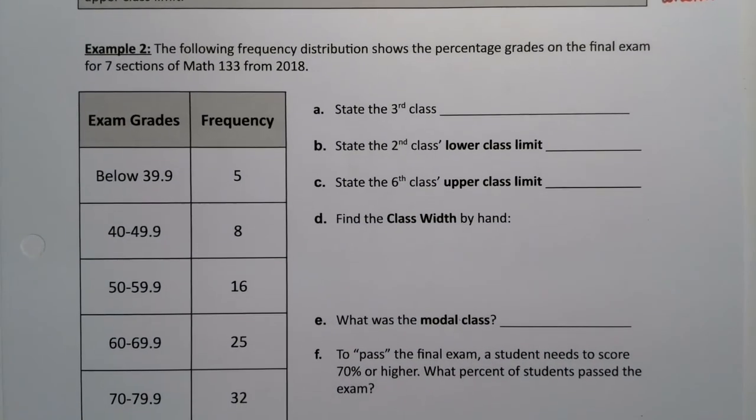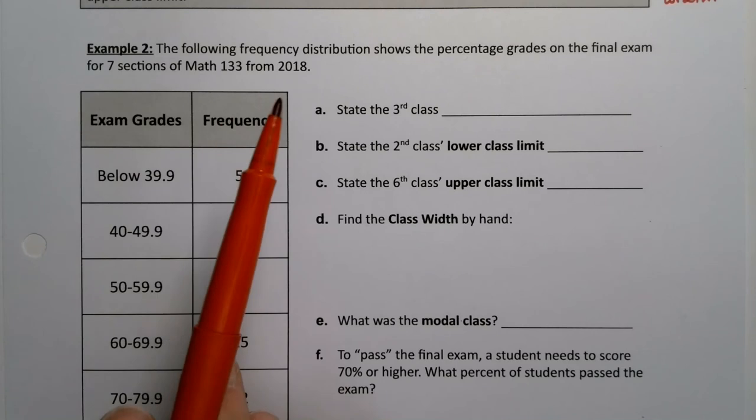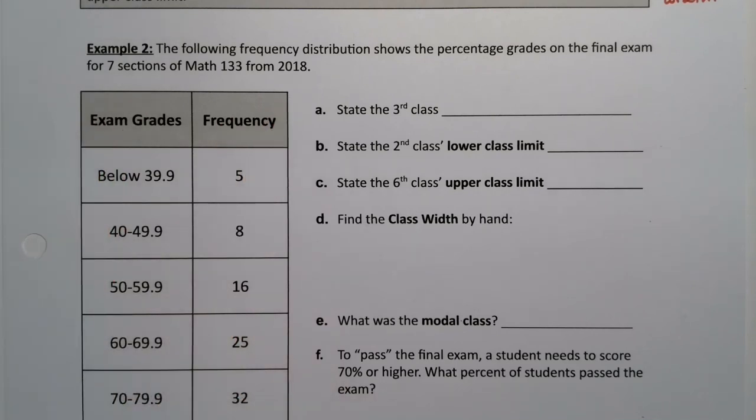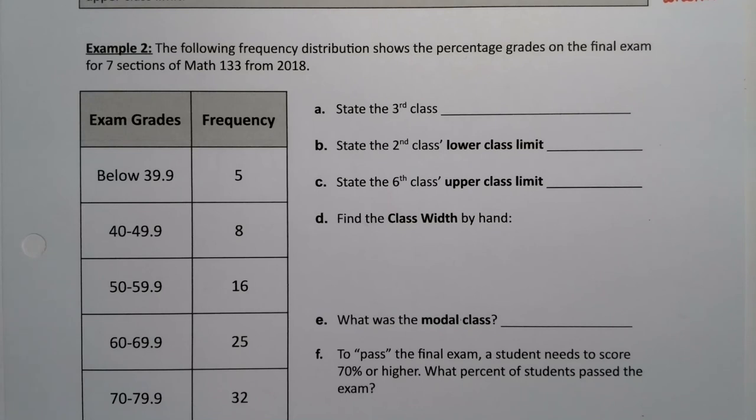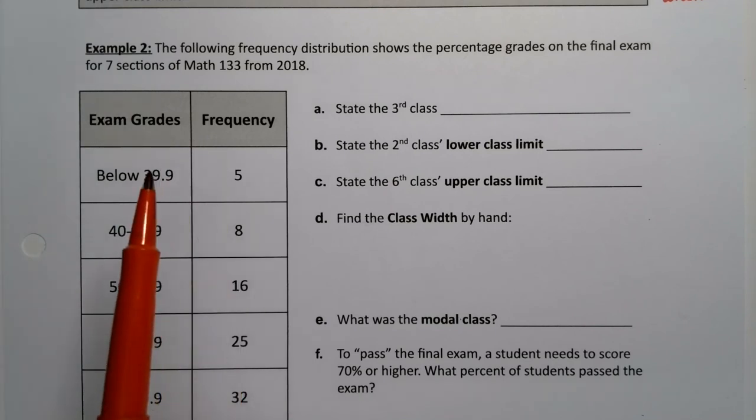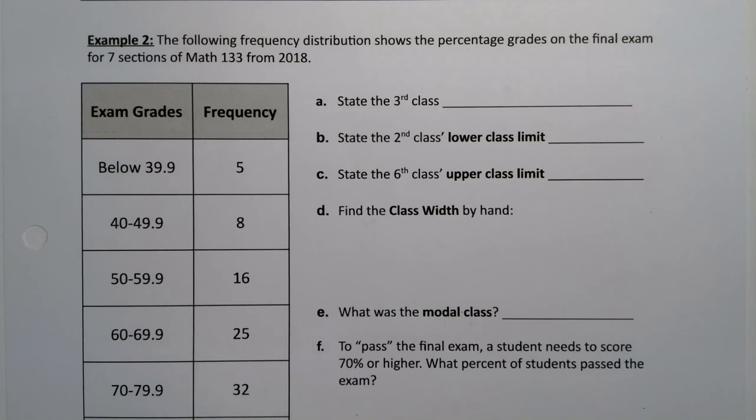Let's look at this example, because all these definitions will hopefully solidify a little bit when we look at it. These are the actual grade distributions for seven sections of Math 133 from 2018. These are the final exam percentage grades. Seven sections worth of students, and these were their grade distributions for the final exam.